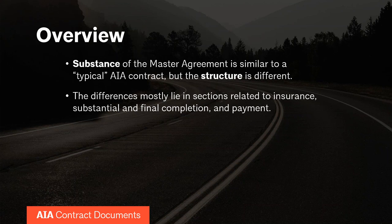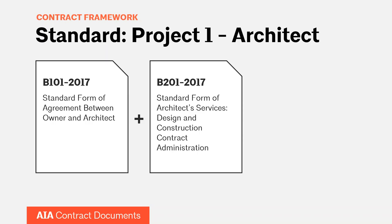The differences in structure and substance mostly lie in sections related to insurance, substantial and final completion, and payment. Looking at what you're more traditionally used to seeing: you might have a standard contract for a standard project — what I'm calling project number one — between an owner and an architect. You might have a B-101, your owner-architect agreement, and attach to it the B-201 for design and construction contract administration services. Together, they form the contract for the first project.